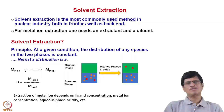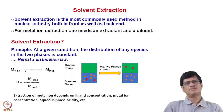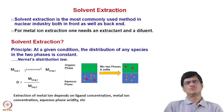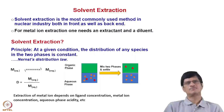Subsequently, the solvent extraction processes became more popular in the nuclear industry for both the front and back end of the nuclear fuel cycle. In this case, what one needs is an extractant which is responsible for forming a complex with the actinide ion, which is subsequently partitioned into a diluent. The organic phase contains the diluent, the extractant, and the metal-extractant complex, whereas the aqueous phase contains the metal ions and other impurity metal ions.